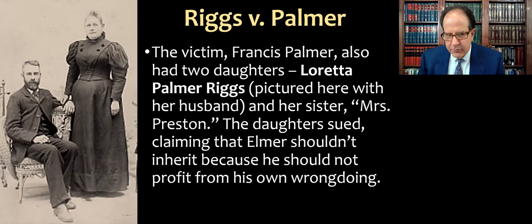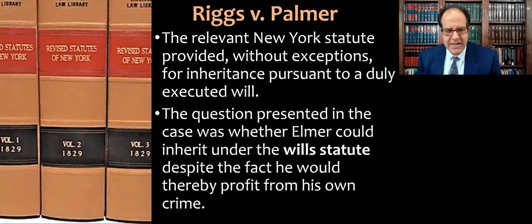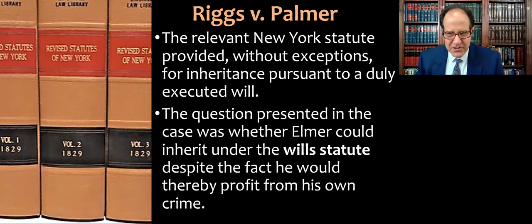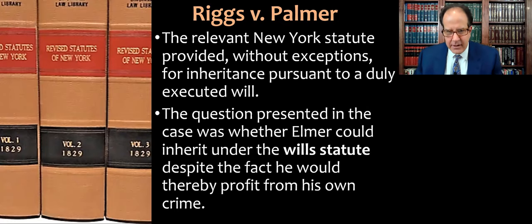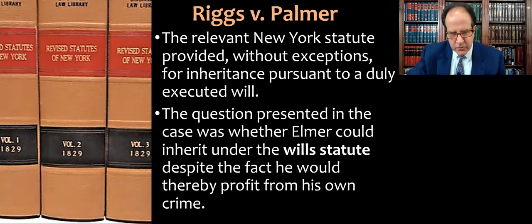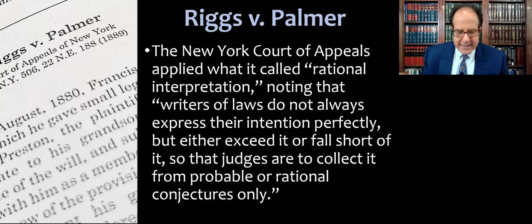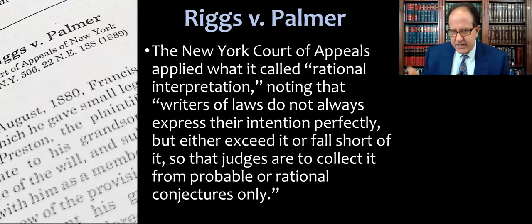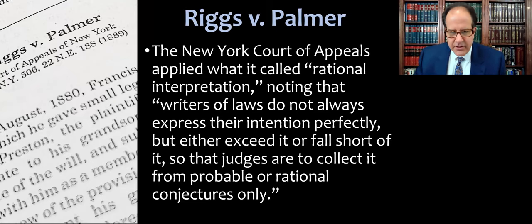The daughter sued, claiming that Elmer shouldn't inherit because he should not profit from his own crimes or wrongdoing. The statutes at the time — the old New York statutes — provided inheritance pursuant to a duly executed will with no exceptions. So if the will was properly executed, the courts had to honor the wishes of the testator. The question presented was whether Elmer could inherit under the wills statute despite the fact that he would thereby profit from his crime. The statute didn't articulate an exception for people that kill the testator in order to inherit.